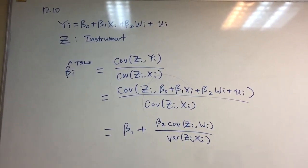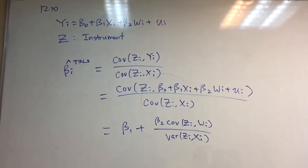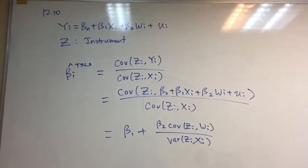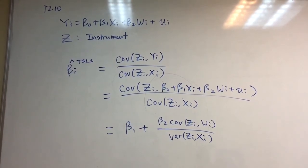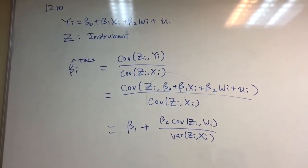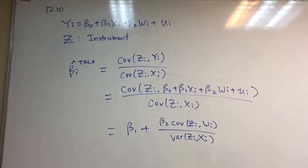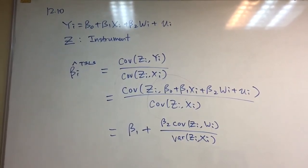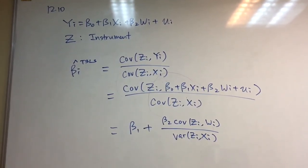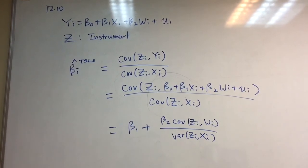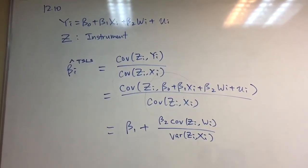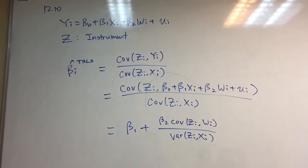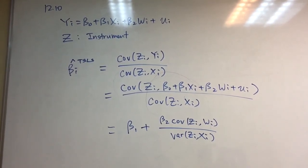Although the question does not ask for this follow-up: if beta_2 is equal to zero, then no matter whether the covariance of zi and wi is zero or not, beta_1_hat still converges to beta_1. Therefore, if beta_2 is indeed zero, beta_1_hat is still consistent.